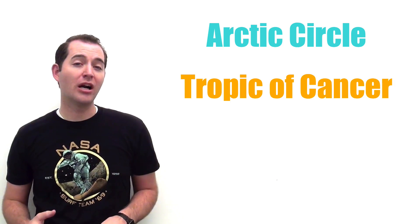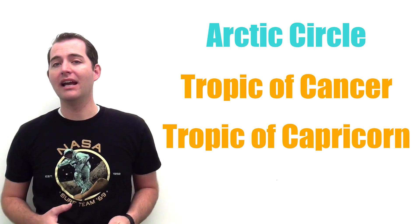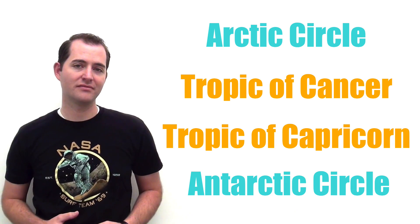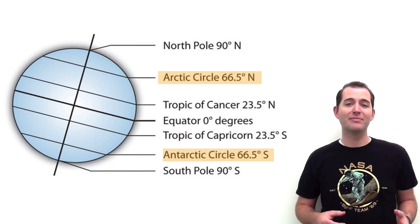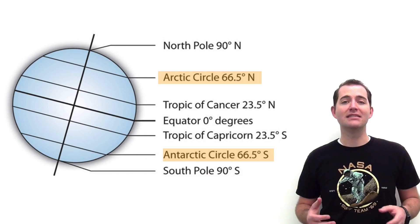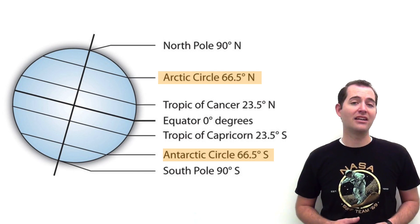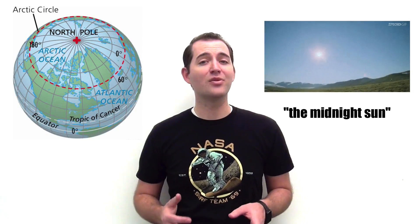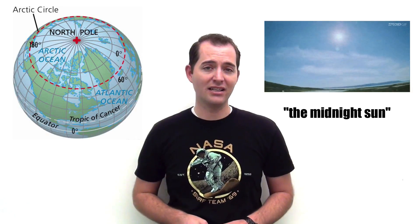A few other important yet still imaginary lines on the earth are the Arctic Circle, the Tropic of Cancer, the Tropic of Capricorn, and the Antarctic Circle. The Arctic and Antarctic circles are respectively found approximately 66 degrees of latitude north and 66 degrees of latitude south of the equator. The Arctic Circle represents the furthest point south of the North Pole in the northern hemisphere where locations experience both 24 hours of daylight and 24 hours of night time at some point during the year.